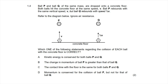Question 1.4: Ball P and ball Q of the same mass are dropped onto a concrete floor. Both hit the floor at speed v. Ball P rebounds with speed v but ball Q rebounds with speed one-half v. Option A — kinetic energy is conserved for both balls — is incorrect, because kinetic energy equals one-half times mass times velocity squared, so ball Q's kinetic energy is clearly not conserved since its velocity has halved.